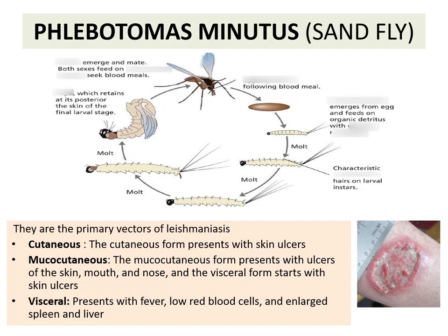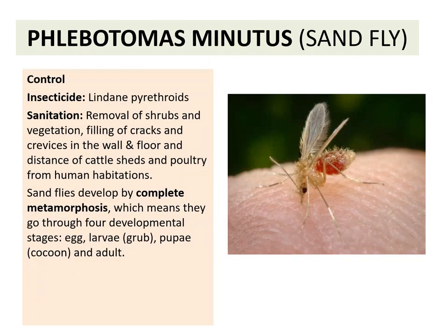Phlebotomus lays eggs; the eggs develop into larvae through different molts, and then the pupa is formed, which leads to the emergence of the adult fly. The whole life cycle is completed inside the host. For control, lindane and pyrethroids are used, along with removal of shrubs and vegetation, filling of cracks and crevices in walls and floors, and keeping cattle sheds and poultry at a distance from human habitation. The sandfly develops by complete metamorphosis, going through all four developmental stages: egg, larva, pupa, and adult.